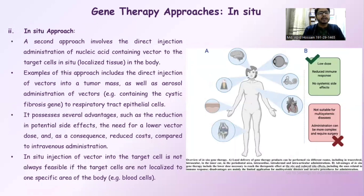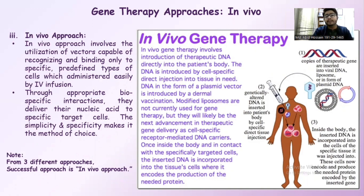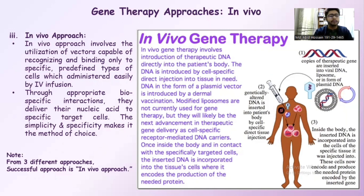In the in situ approach, treatment is applied directly to specific organs such as the brain, eyes, kidney, bones, or heart. In vivo gene therapy involves the utilization of a vector's capability to recognize and bind only to a specific site. When the therapeutic DNA is applied to the patient's body, it finds and binds to the specific site, making it very site-specific. This is considered the most successful approach among the three types.